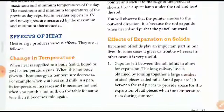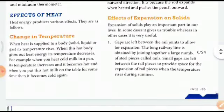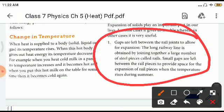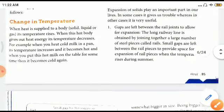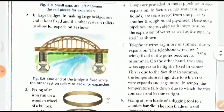We are looking at the effects of expansion on solids. Gaps are left between railway joints to allow for expansion. This is very important and commonly seen because rail tracks are made of iron, so they expand during the daytime, and when they expand these ends will come closer.